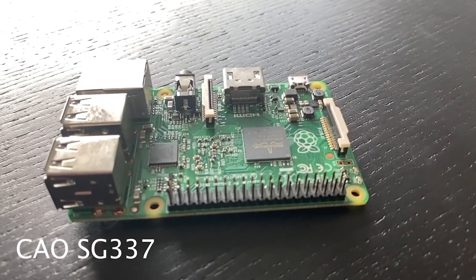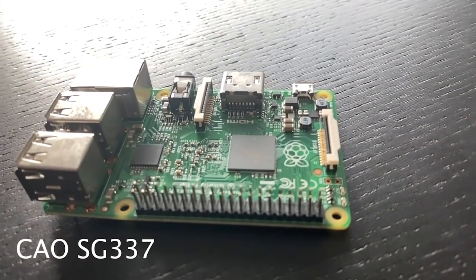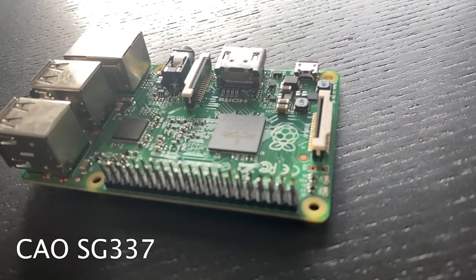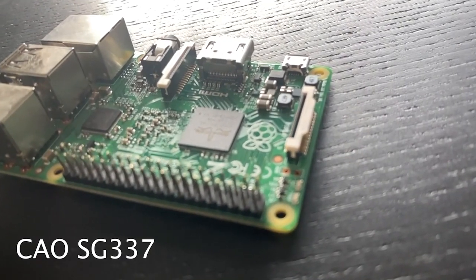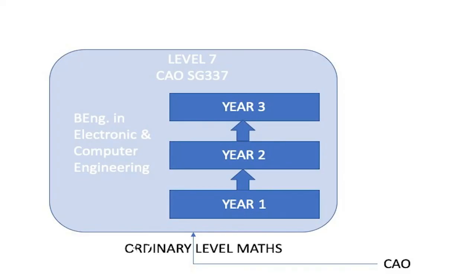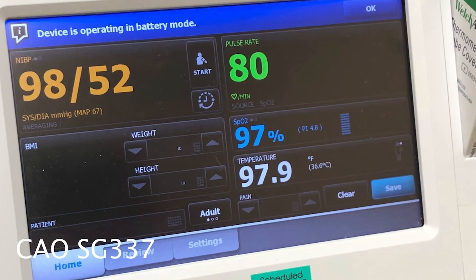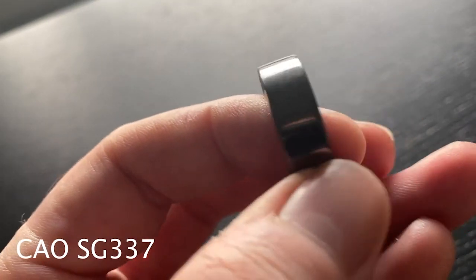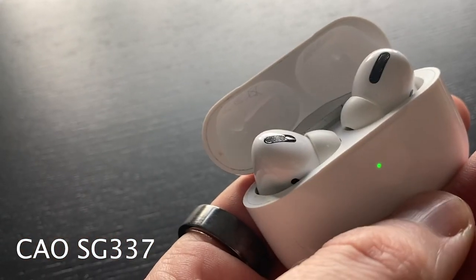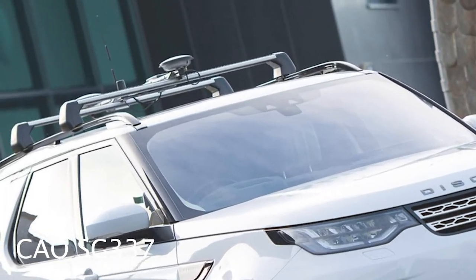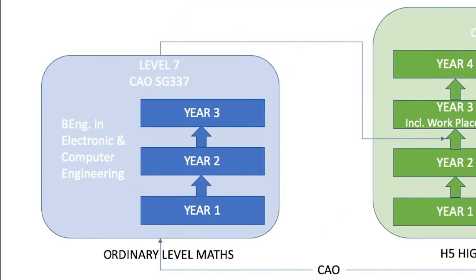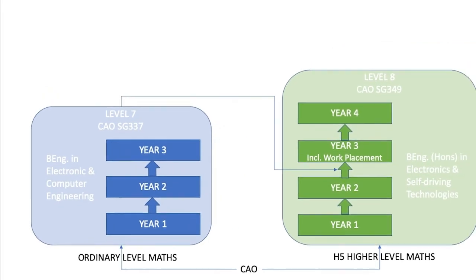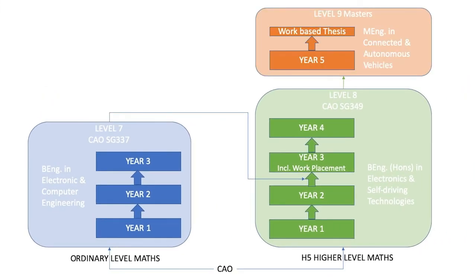If you are interested in technology or engineering but are not doing higher level maths, why not consider our Level 7 in Electronic and Computer Engineering? This is a three-year program that looks at the design and development of embedded electronic systems - the medical devices that keep us healthy, the consumer devices that keep us entertained, and the control systems that keep us safe on the road. You can then progress to the Level 8 in Electronics and Self-Driving Technologies, and from there to the masters. Check out the link below for more information.